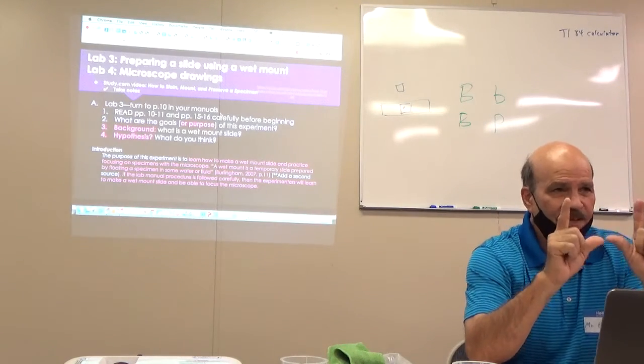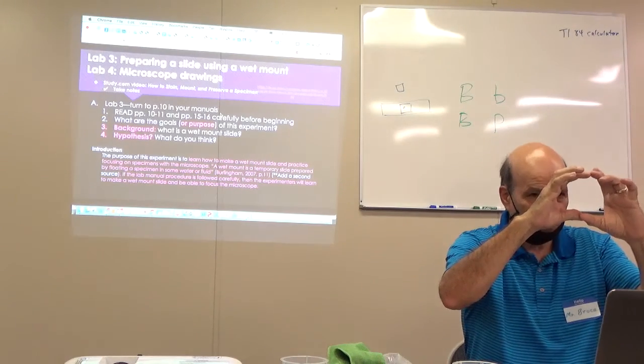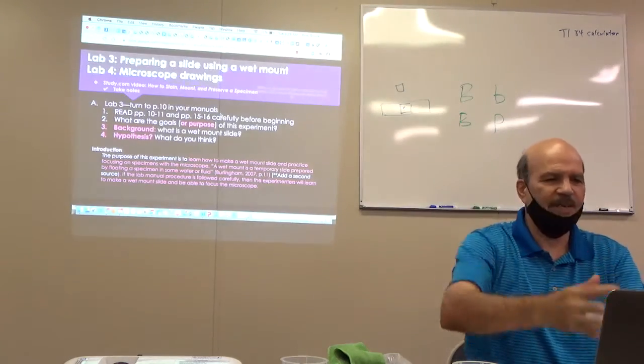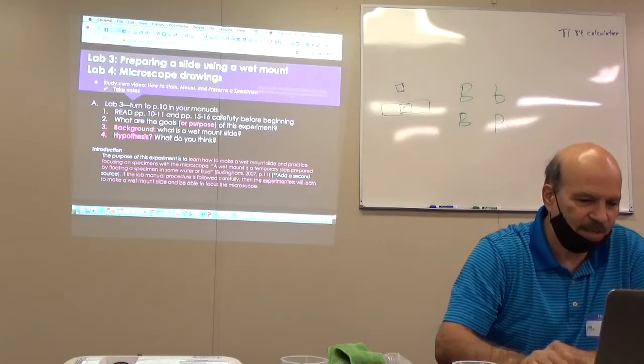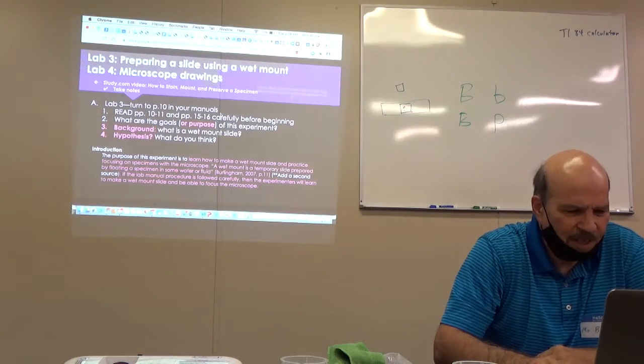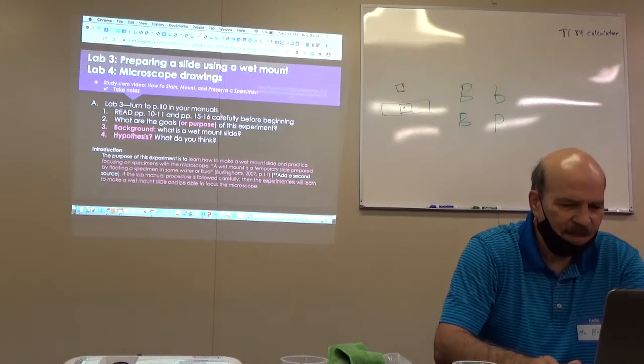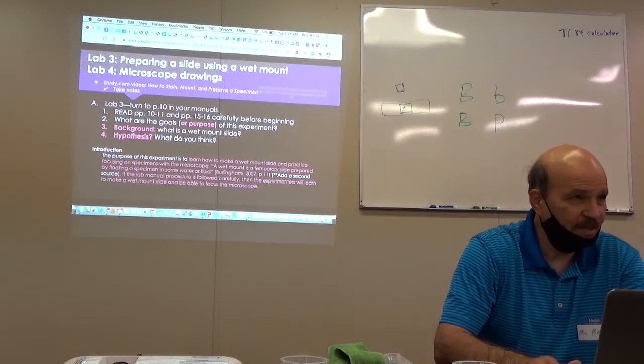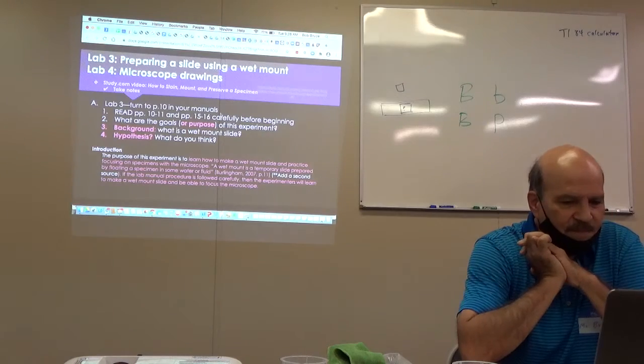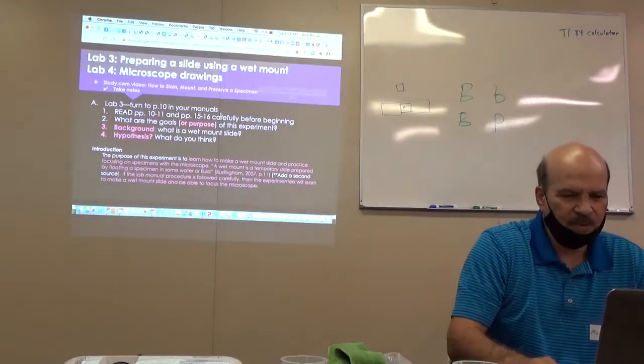Now, you find the weaker magnification and you center what you're looking at in the center of the field of view. Then you bring it all the way down. Switch to higher magnification. Bring it up until it's focused. A wet mount is a temporary slide prepared by a specimen in some water or other fluid. You should add another source. You should research and find out. It's part of your lab report. Anyway, you're going to learn how to make a wet mount slide and how to focus a microscope carefully. Okay?